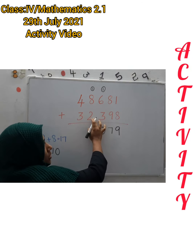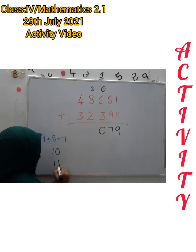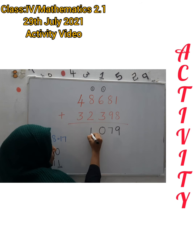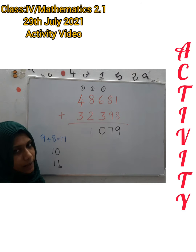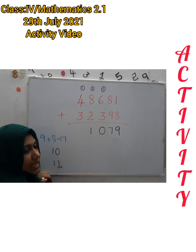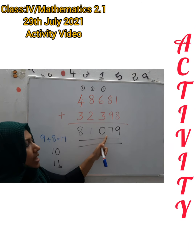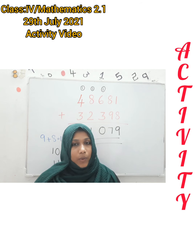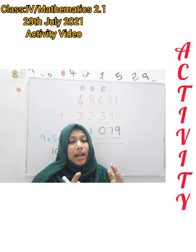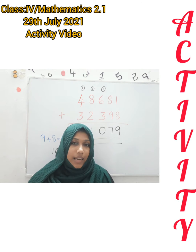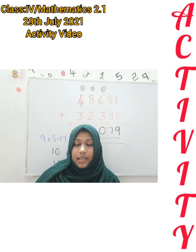8 plus 2 is 10, plus 1 is 11 — write 1 here and carry 1 to the next column. Then 4 plus 3 is 7, plus 1 is 8. So the answer is 81,079. I think now you can add large numbers. In the same way we can add 4-digit, 5-digit, and 6-digit numbers.